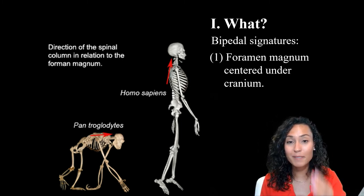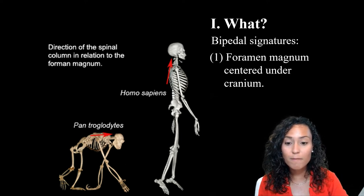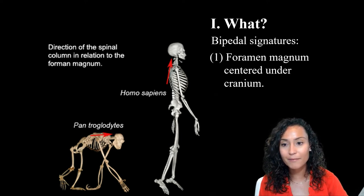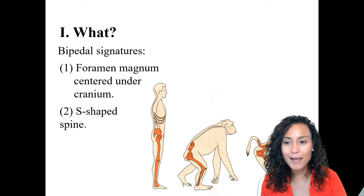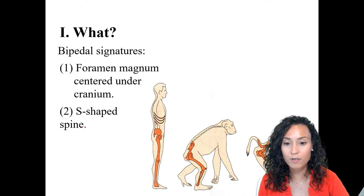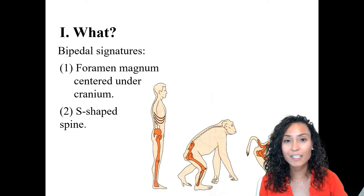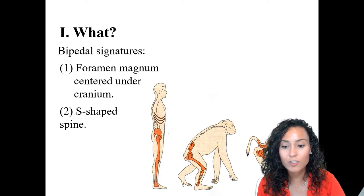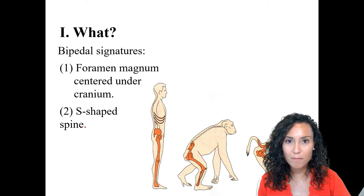In bipeds, however, the spinal column runs perpendicular to the ground to keep us upright. As a result, the foramen magnum is located more towards the bottom of the cranium rather than towards the back. Another key difference between quadrupeds and bipeds is the S-shape of the spine. In quadrupedal primates, the center of gravity is located near the center of the torso, which is different from modern humans whose center of gravity is actually in our pelvises. That lumbar curvature of the spine helps to bring the center of gravity in bipeds closer to the body's midline.